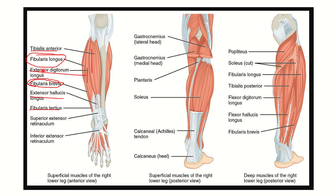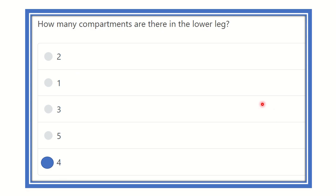In the superficial posterior group, we can see the gastrocnemius with its two heads, soleus, and plantaris — these three muscles are members of the superficial posterior compartment. The deep posterior compartment muscles include popliteus, flexor digitorum longus, and flexor hallucis longus.